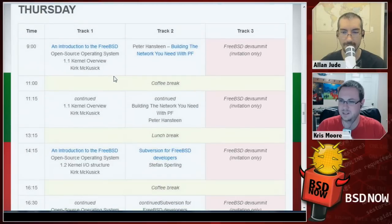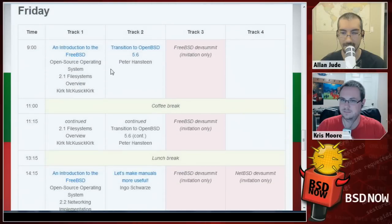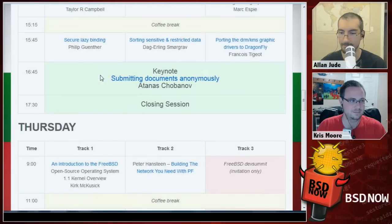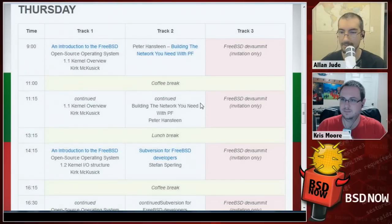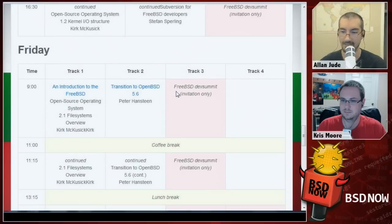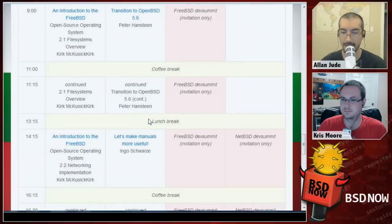Some of the tutorials they have include an introduction to FreeBSD as an open-source operating system by Kirk McKusick, which runs both days and goes through a condensed version of one of his courses. They also have 'Building the network you need with PF' from Peter Hanstein, subversion for FreeBSD developers, and Peter Hanstein also has 'Transitioning to OpenBSD 5.6.'